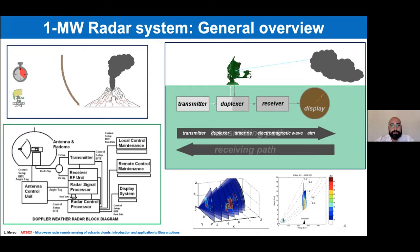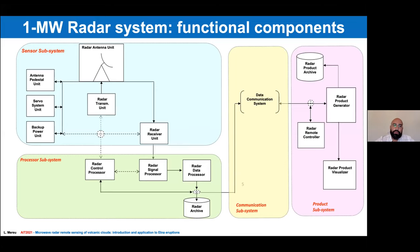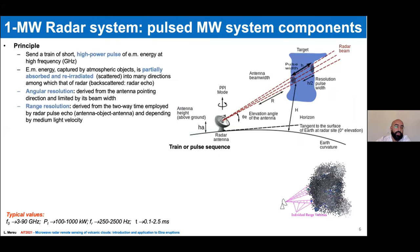We can find four main subsystems within the radar system: the sensor subsystem, where we observe features related to the antenna; the processor subsystem, where raw data is elaborated; the communication subsystem; and the product subsystem, where data are stored and processed.